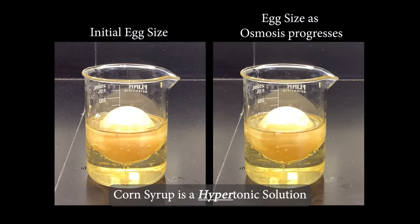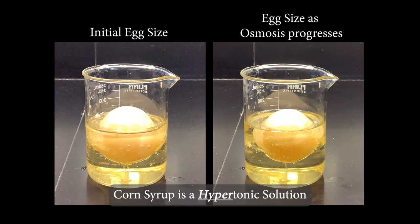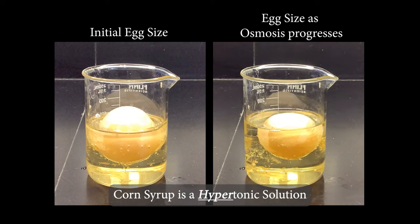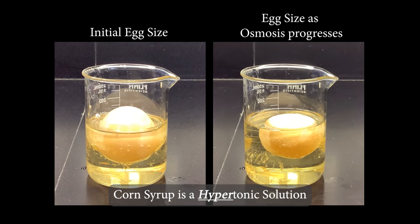Let's speed this up. Watch what happens as the egg soaks in the hypertonic corn syrup. Notice how it shrinks and becomes shriveled up like a raisin. This is because it loses water due to osmosis.